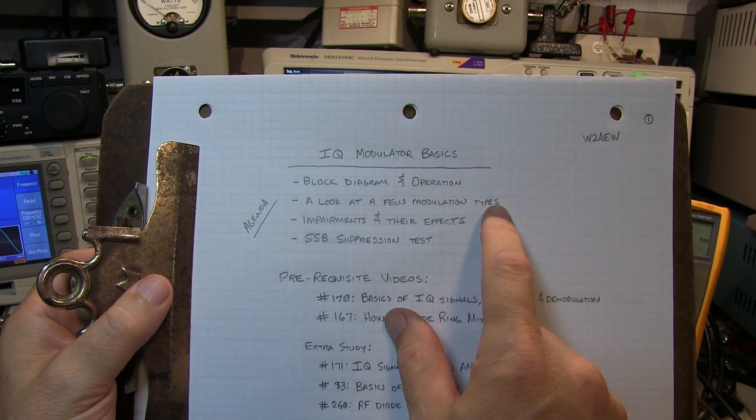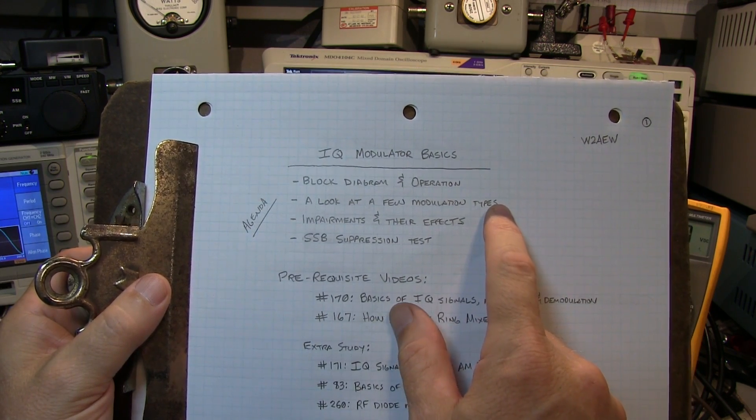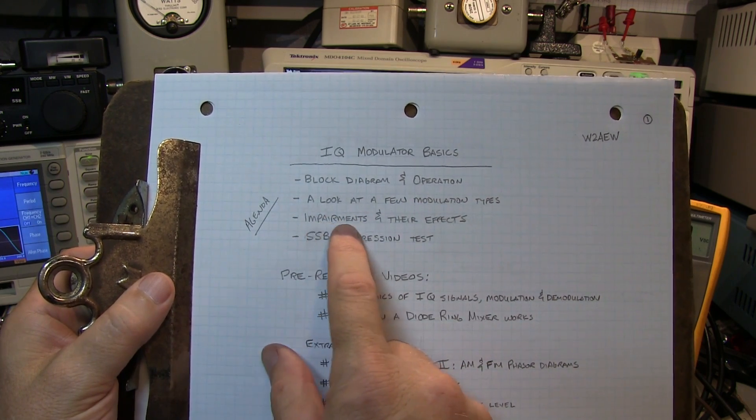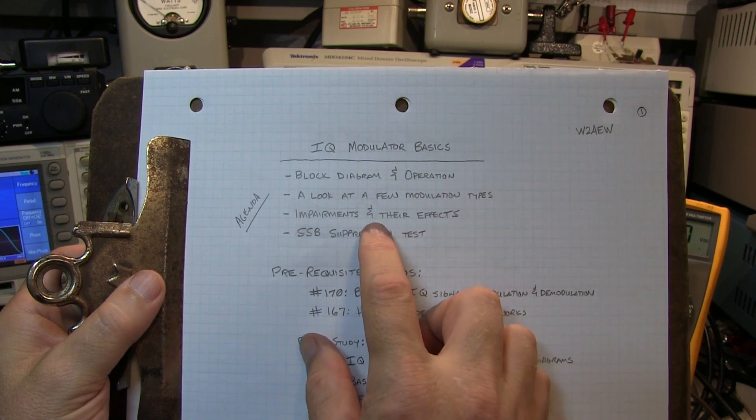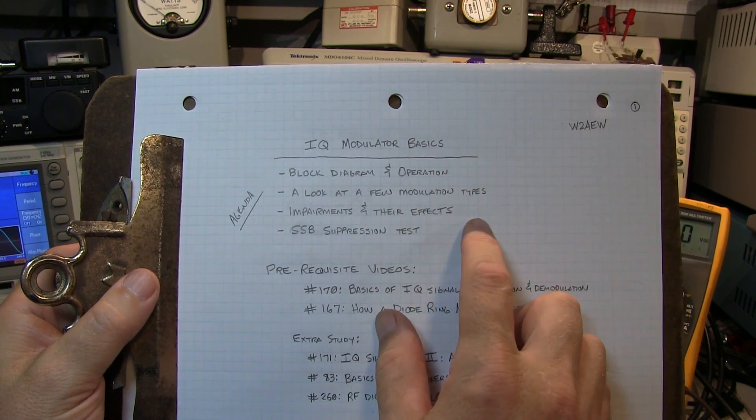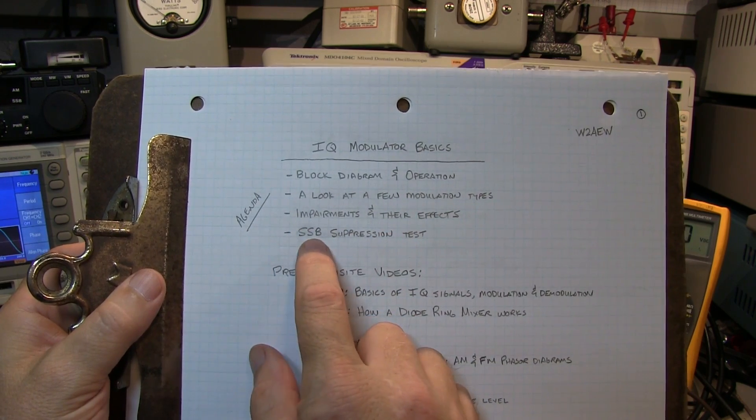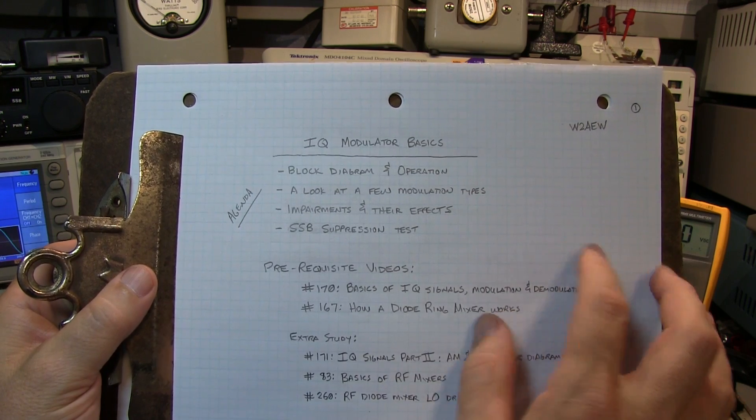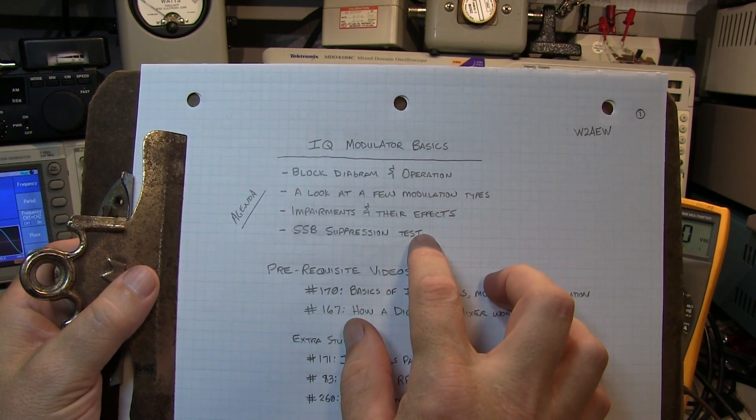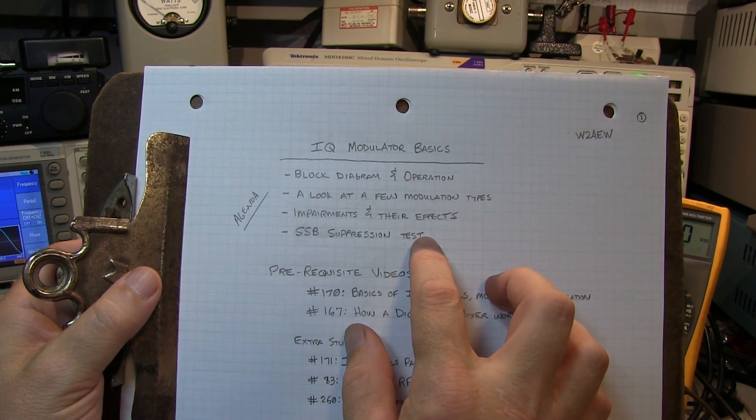We'll use the modulator to generate a couple of different types of modulation, and then we'll take a look at some of the impairments that might affect the operation of the modulator and look at those effects in the resulting modulated output. And then finally, we'll run a single sideband suppression test, which is a pretty common performance test that's used to characterize IQ modulators.